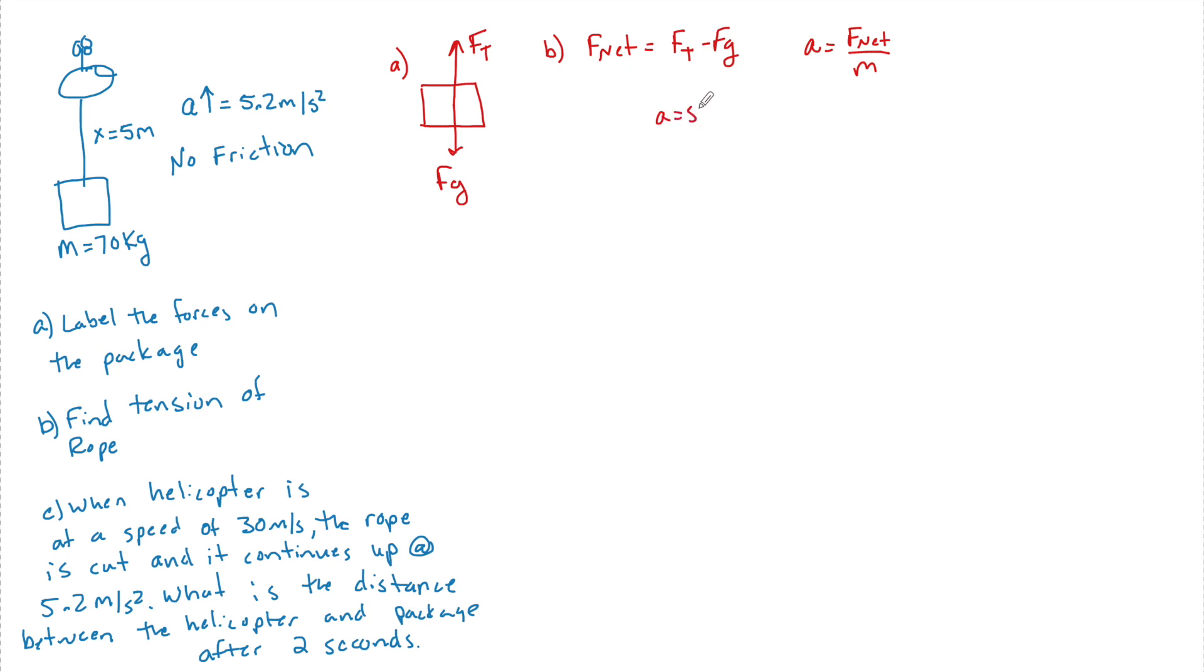So a is 5.2 meters per second squared, F net equals FT minus FG, and M equals 70 kilograms.